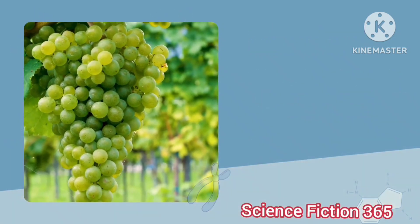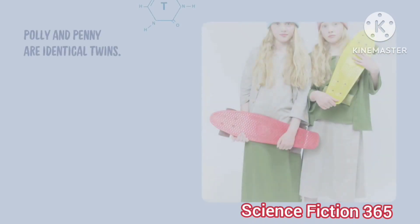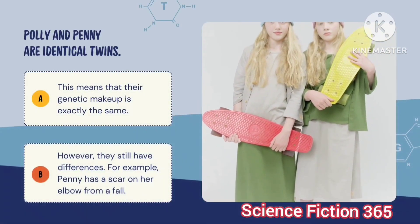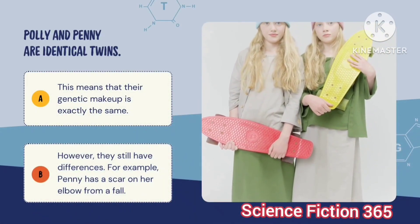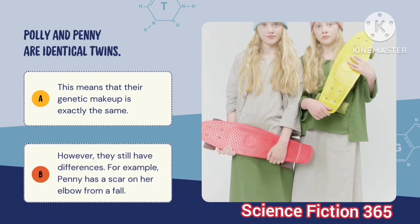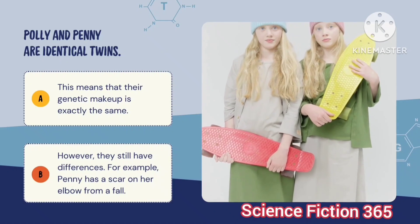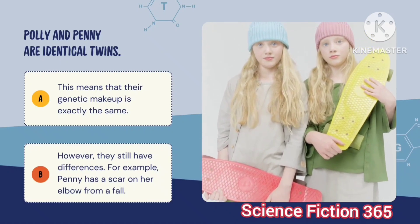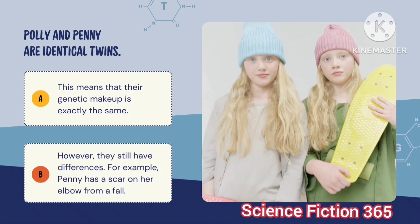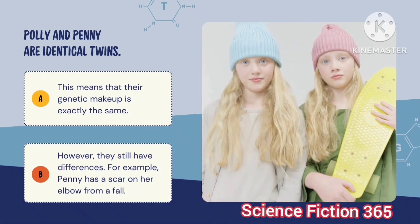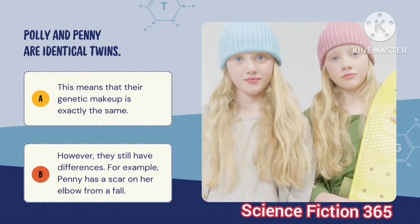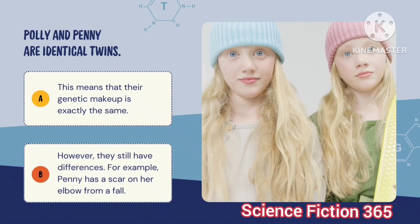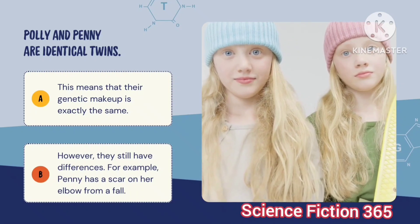In this picture there are two girls, Pony and Penny. They are identical twins, which means their genetic makeup is exactly the same. However, they still have differences — for example, Penny has a scar on her elbow from a fall.